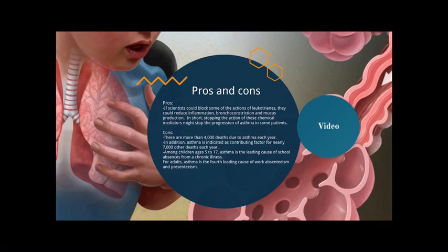What are the pros and cons of the effects of leukotrienes in asthma? A pro is that if scientists could block some of the actions of leukotrienes, they could reduce the inflammation, bronchoconstriction, and mucus production. In short, stopping the action of these chemical mediators might stop the progression of asthma in some patients. As a con, there are more than 4,000 deaths due to asthma each year. In addition, asthma is indicated as a contributing factor for nearly 7,000 other deaths each year.